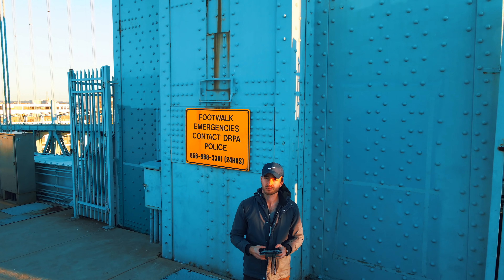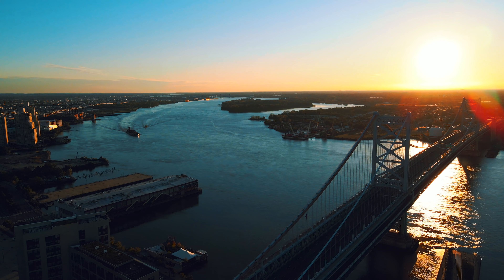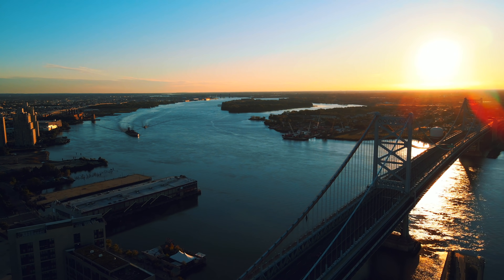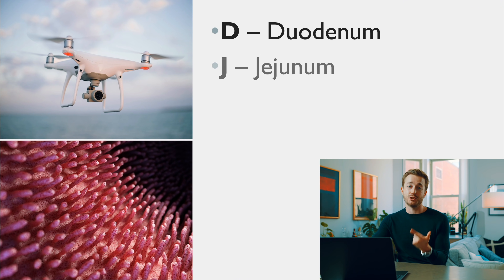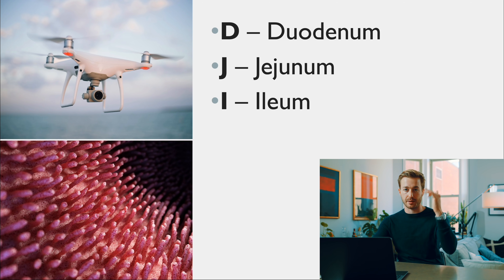Here's a mnemonic I invented myself. There are three parts to the small intestine: the duodenum, the jejunum, and the ileum. I could never remember which came first — until I bought a DJI drone. Since then, I've never forgotten it. D-J-I: duodenum, jejunum, ileum — in order from top to bottom.